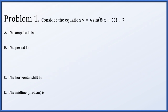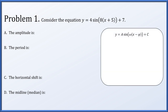First up, let's consider the equation y equals 4 times the sine of 8 times the quantity x plus 5 plus 7. We want to know what the amplitude, period, horizontal shift, and midline or median of this function are. So if you have a function of the form a times the sine of omega times the quantity x minus phi plus c, where omega is presumed to be positive, the absolute value of a is the amplitude, c is the median or midline of the function, 2 pi over omega is the period, and phi is the horizontal shift to the right, presuming you have an x minus phi there.